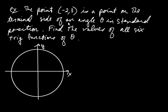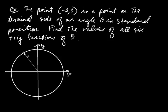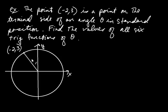This one is slightly different. We're given a point, negative 2, 3, on the terminal side of an angle in standard position. Find the values of all six trig functions of that angle. Let's first locate that point: x is negative 2 and y is positive 3. In the previous example, you knew the angle and then decided on r to find x and y. This is different — you don't know the angle, but you do know x and y. Of course, x, y, and r are all related by the Pythagorean theorem.